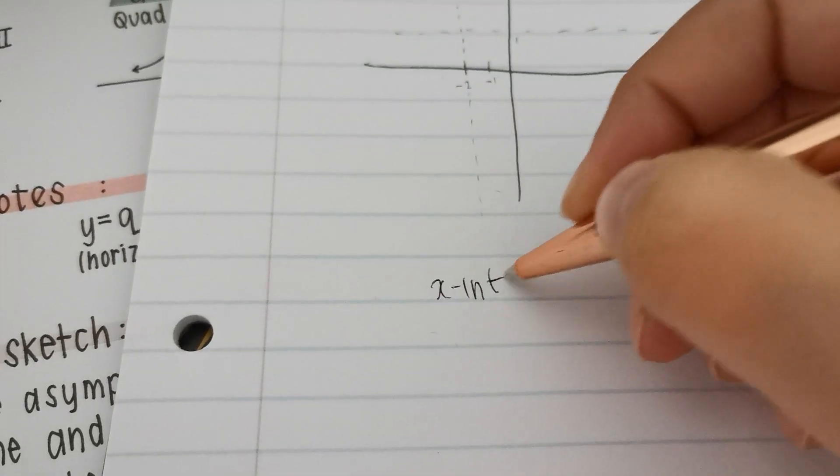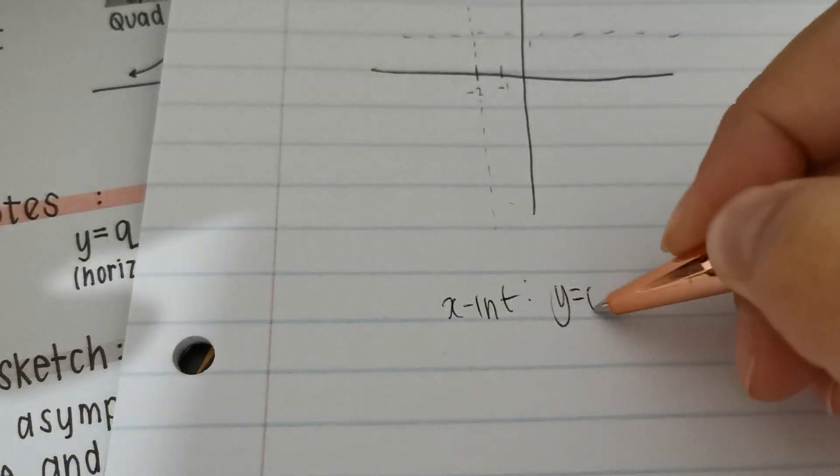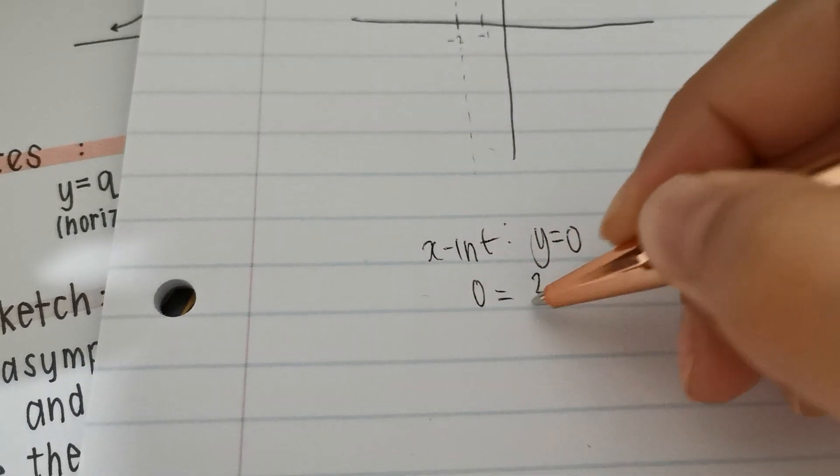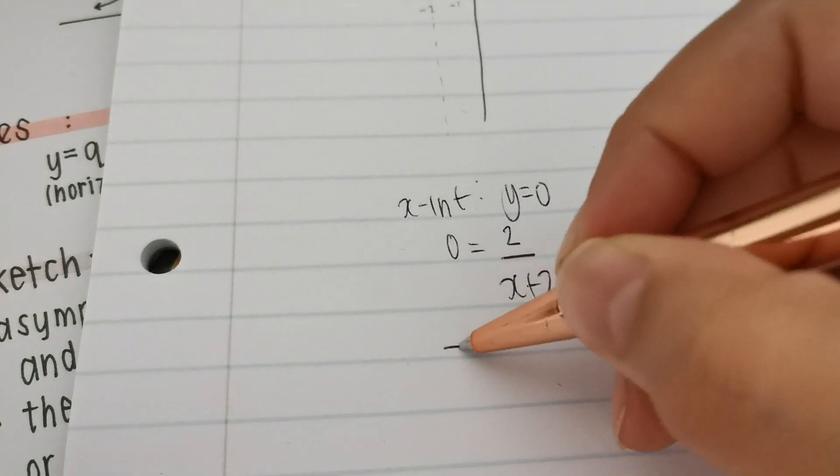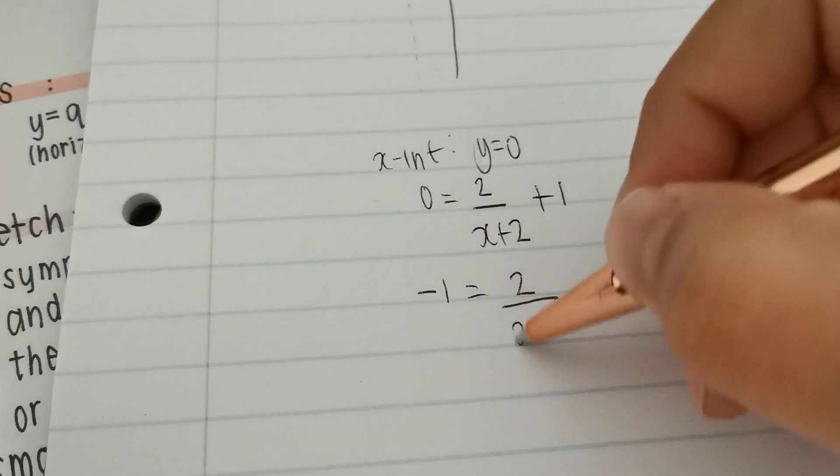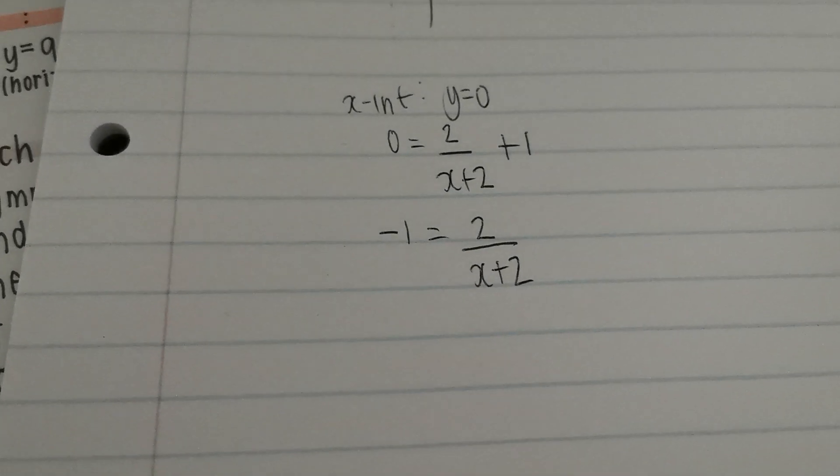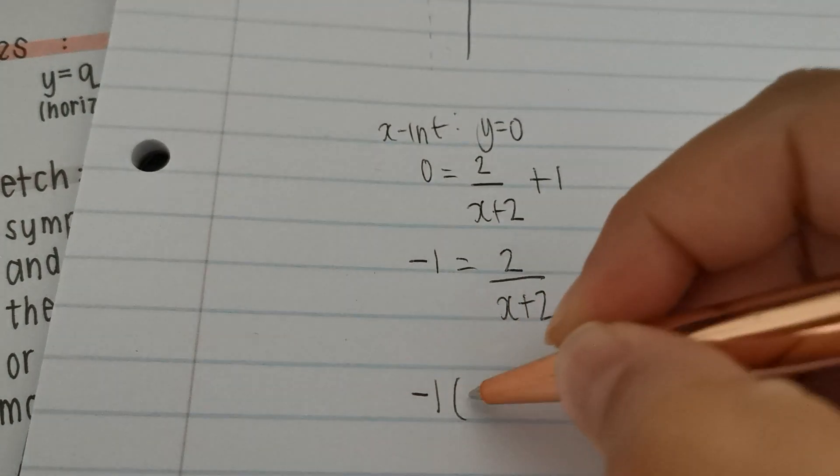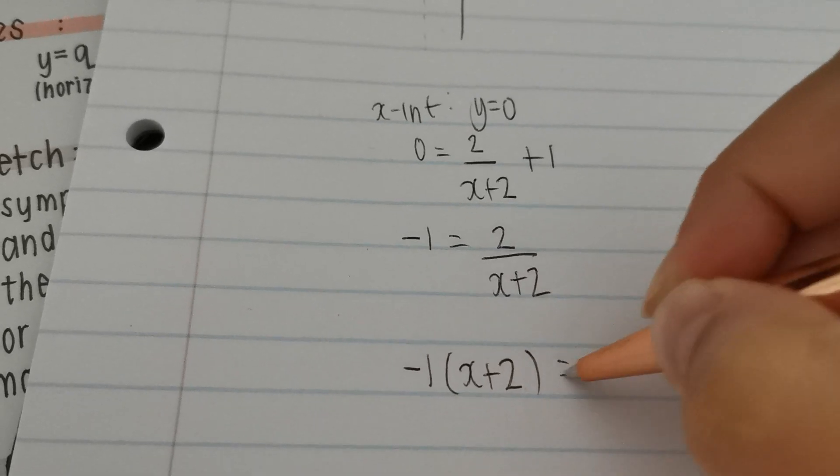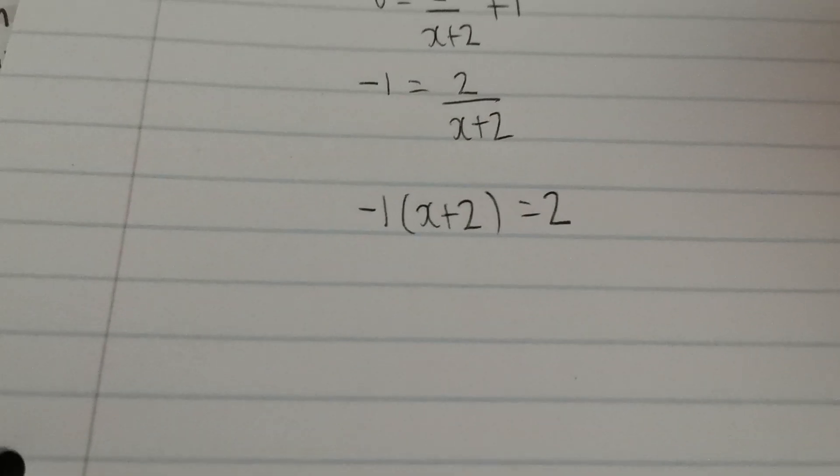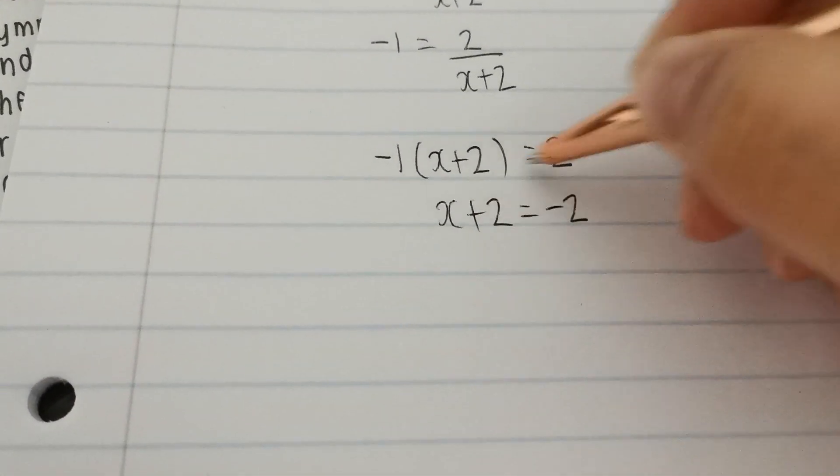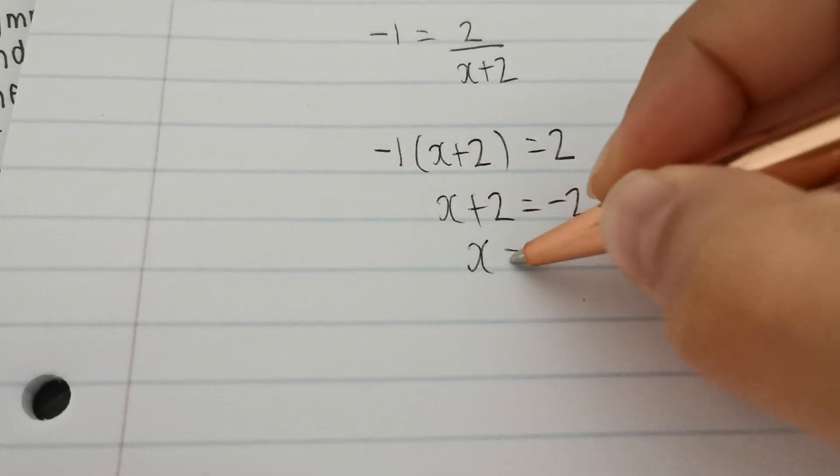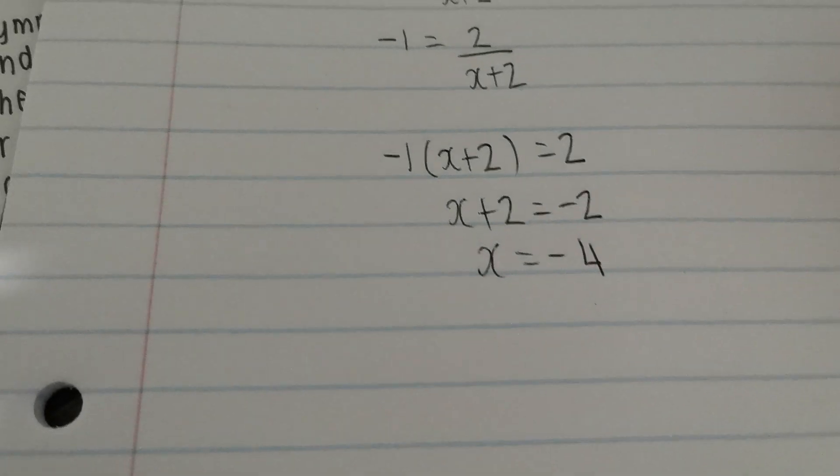And now we need to find x and y intercepts. So x int is where y equals 0. 0 equals 2 over x plus 2 plus 1. I'm taking it over. I'm going to multiply both sides by x plus 2. All right, I'm dividing both sides by this negative 1.